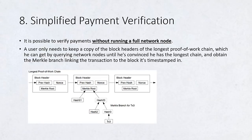Simplified Payment Verification. It is possible to verify payments without running a full network node. A user only needs to keep a copy of the block headers of the longest proof-of-work chain, which he can get by querying network nodes until he's convinced he has the longest chain, and obtain the Merkle branch linking the transaction to the block it's timestamped in. He can't check the transaction for himself, but by linking it to a place in the chain, he can see that a network node has accepted it, and blocks added after it further confirm the network has accepted it.